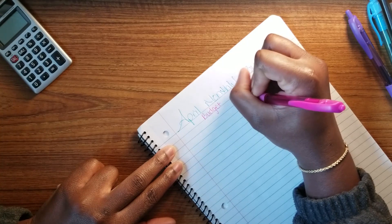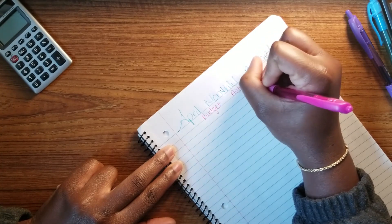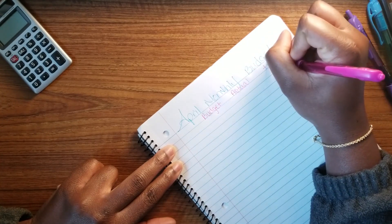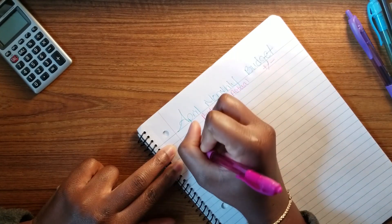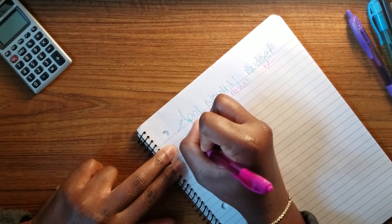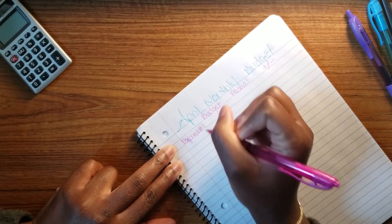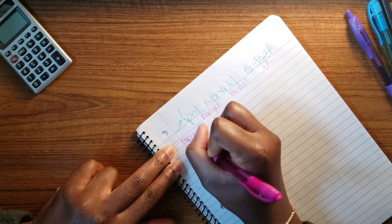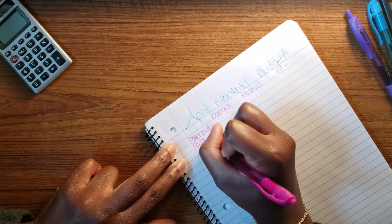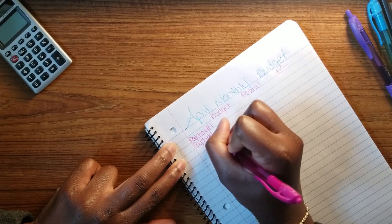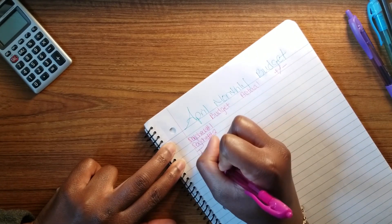I do a budget column, I do an actual column, and I do a plus and minus. So this is going to be paycheck number one, paycheck number two, and then I'm gonna do the total.